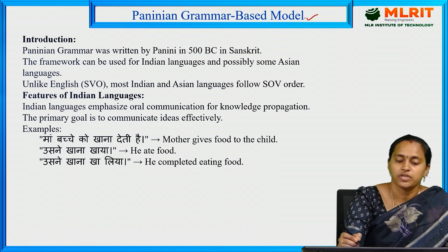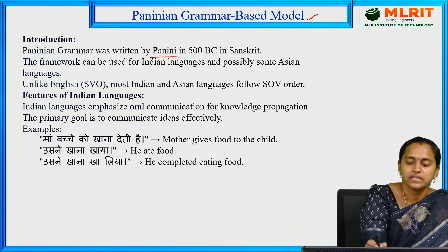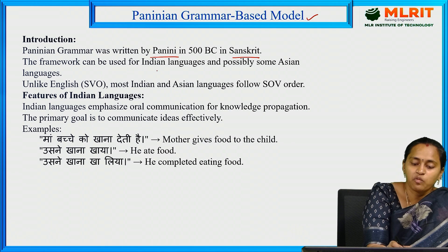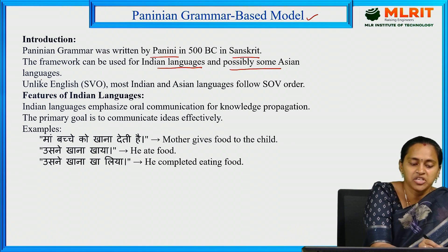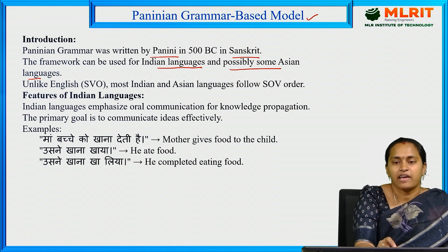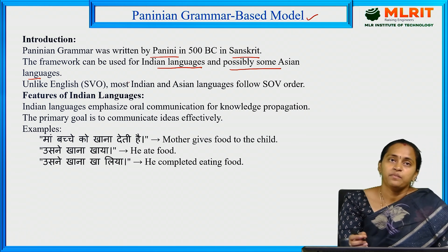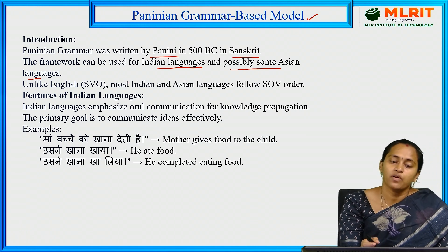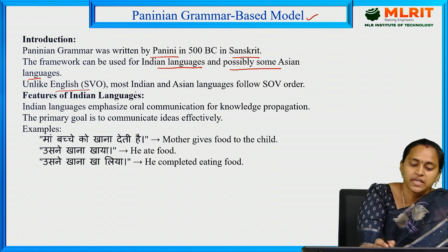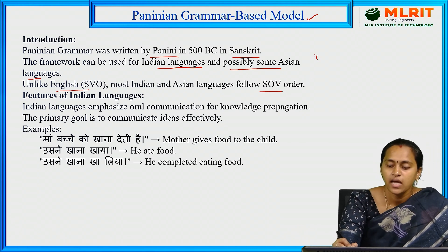Next, the Paninian grammar based model. Paninian grammar was written by Panini in 500 BC in Sanskrit. This framework can be used for Indian languages and possibly some Asian languages like Hindi. A basic difference is that English follows Subject-Verb-Object (SVO) order, while Indian languages follow Subject-Object-Verb (SOV) order.